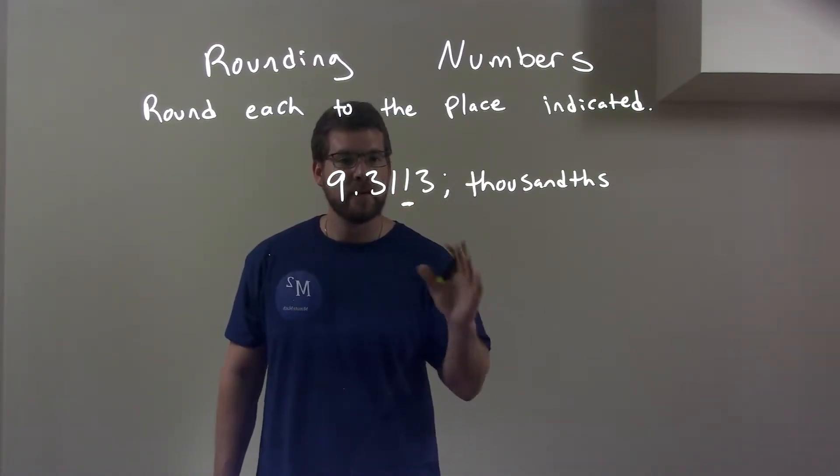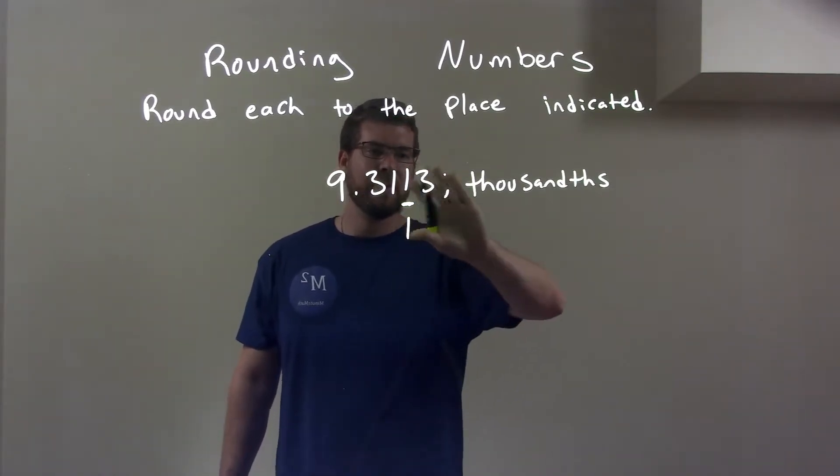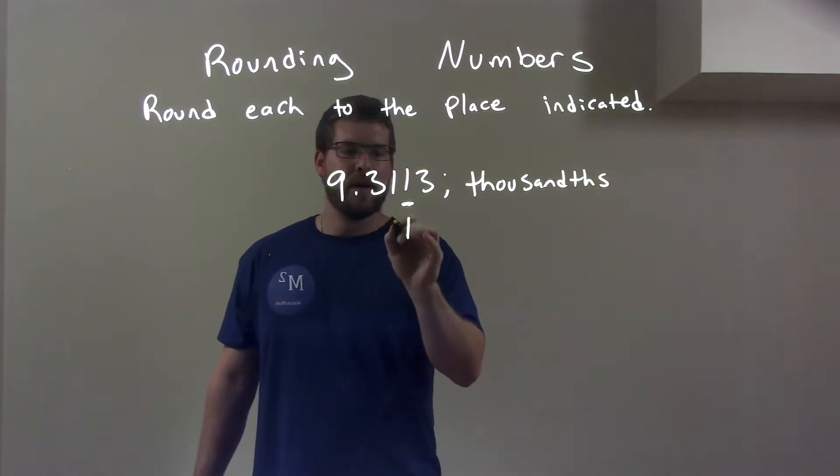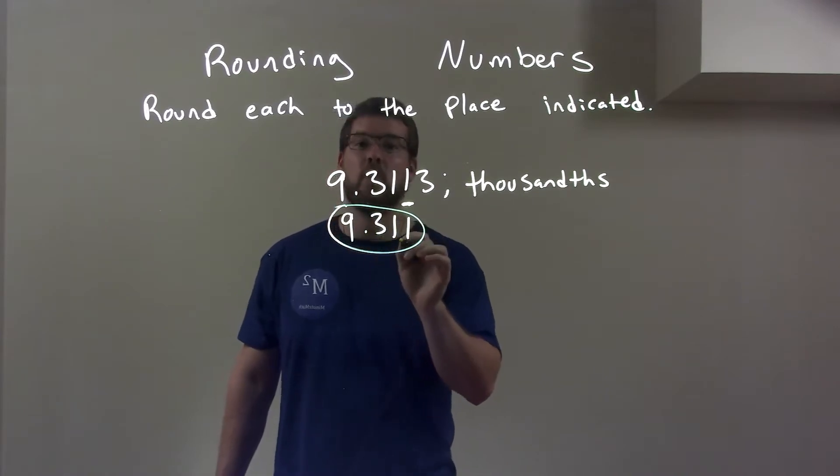That three is between zero and four, causing the one to round down. So the one stays the same, we ignore the three on the right, and we bring down everything else. And here we have our final answer of 9.311.